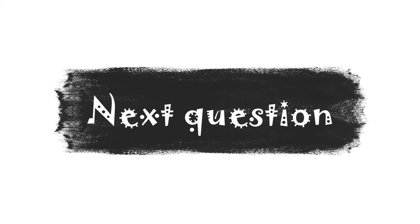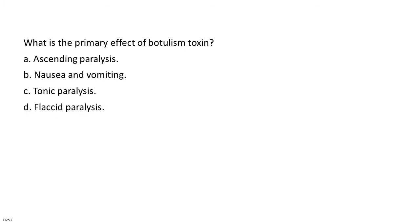What is the primary effect of botulism toxin? a. Ascending paralysis. b. Nausea and vomiting. c. Tonic paralysis. d. Flaccid paralysis.